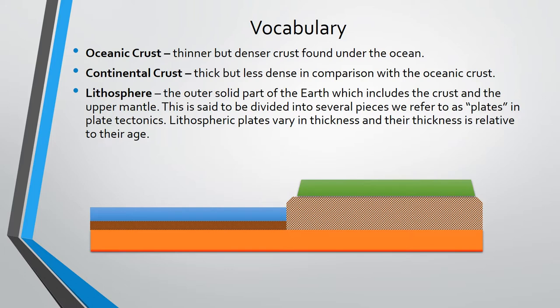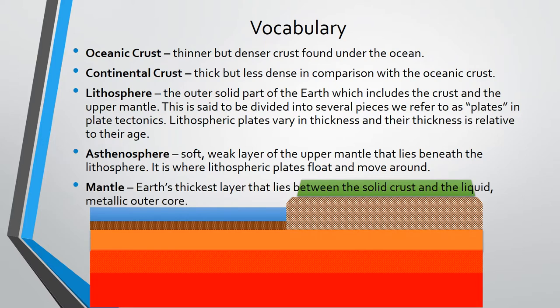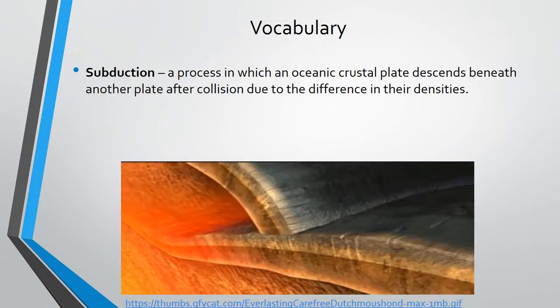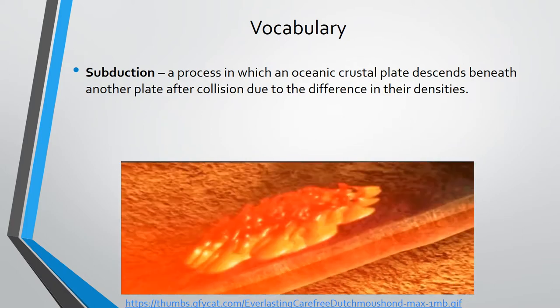These plates vary in thickness, and their thickness is relative to their age. Asthenosphere: the soft, weak layer of the upper mantle that lies beneath the lithosphere. Its high viscosity and malleability facilitates the floating and movement of the lithospheric plates. Mantle: the earth's thickest layer that lies between the solid crust and the liquid metallic outer core. Subduction: a process in which an oceanic crustal plate descends beneath another plate after collision due to the difference in their densities.